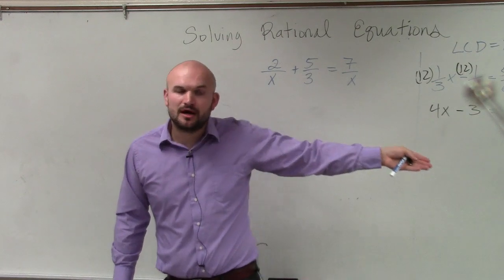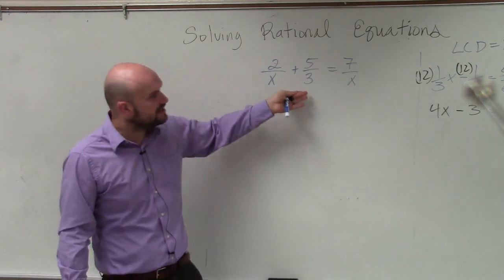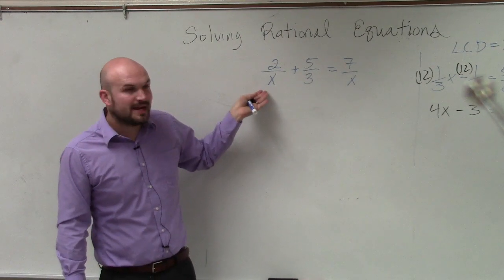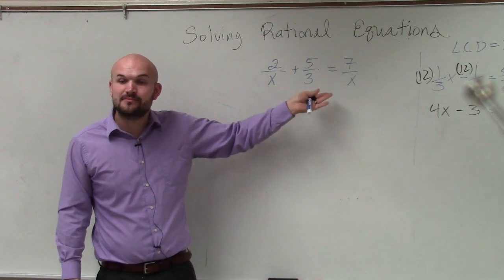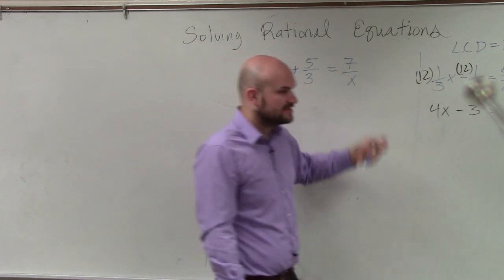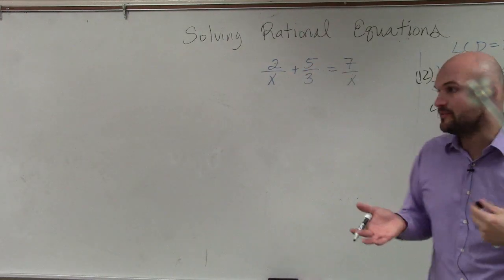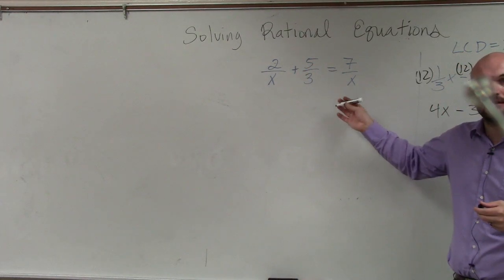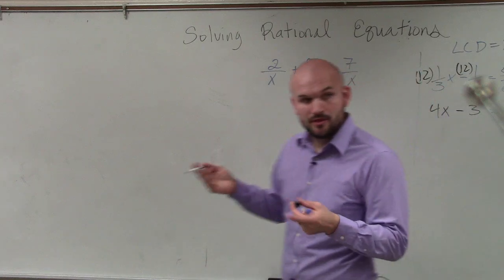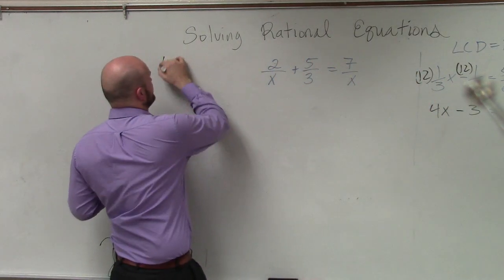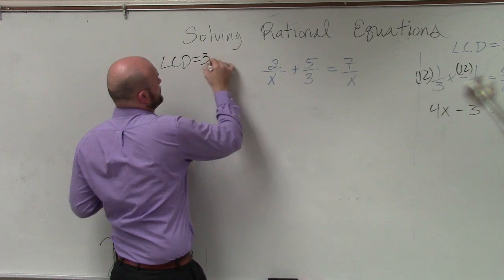So when you're solving rational equations, that's going to be kind of the same process. Except now we have a little bit more of a difficulty, because now we have x in the denominator. So that's going to be a part of our LCD. So does anybody have any idea of what our LCD will be for this example? 3x. So I just write out LCD equals 3x.